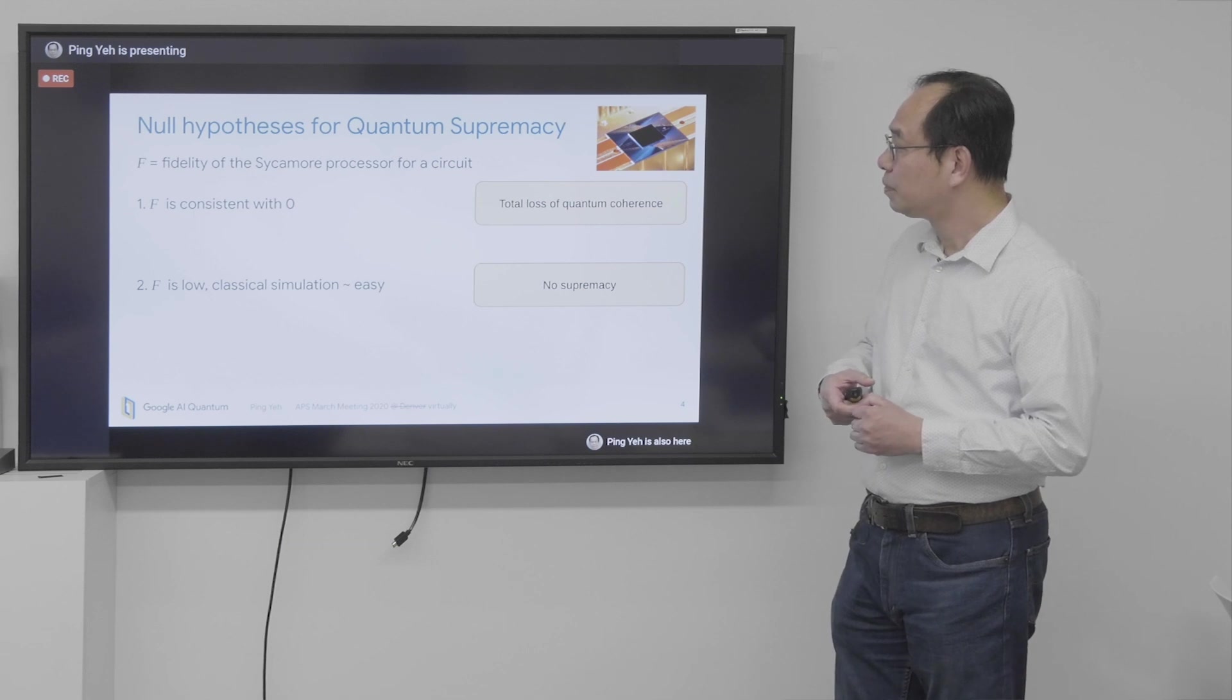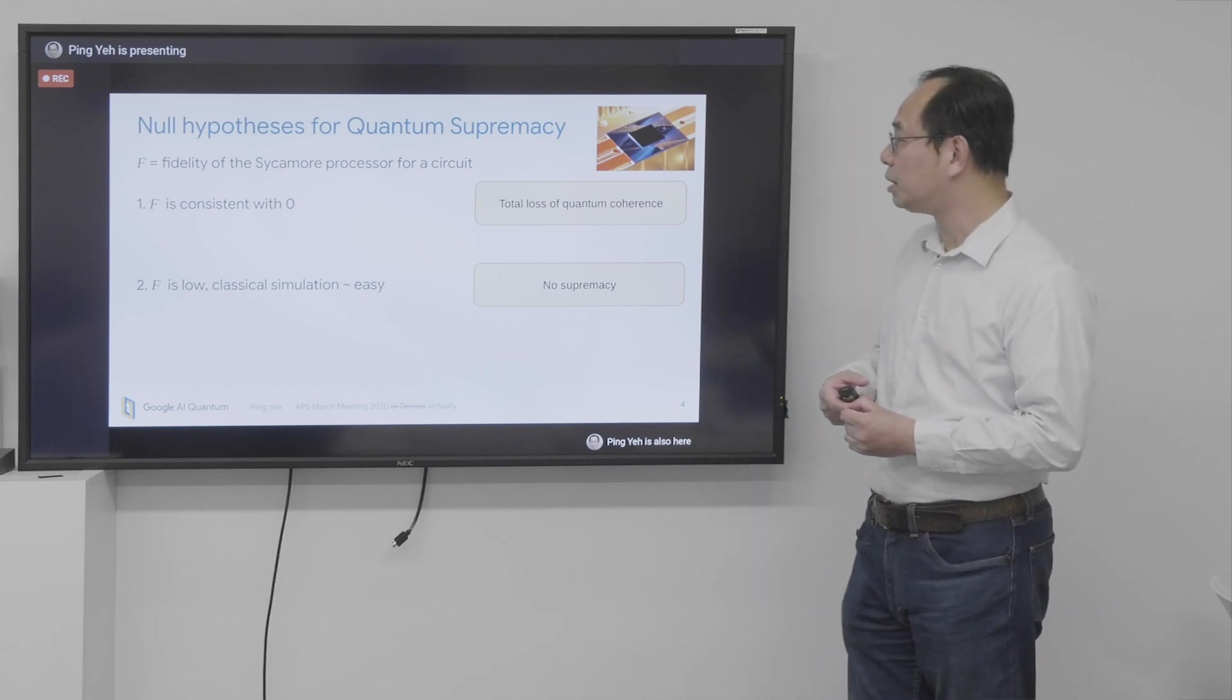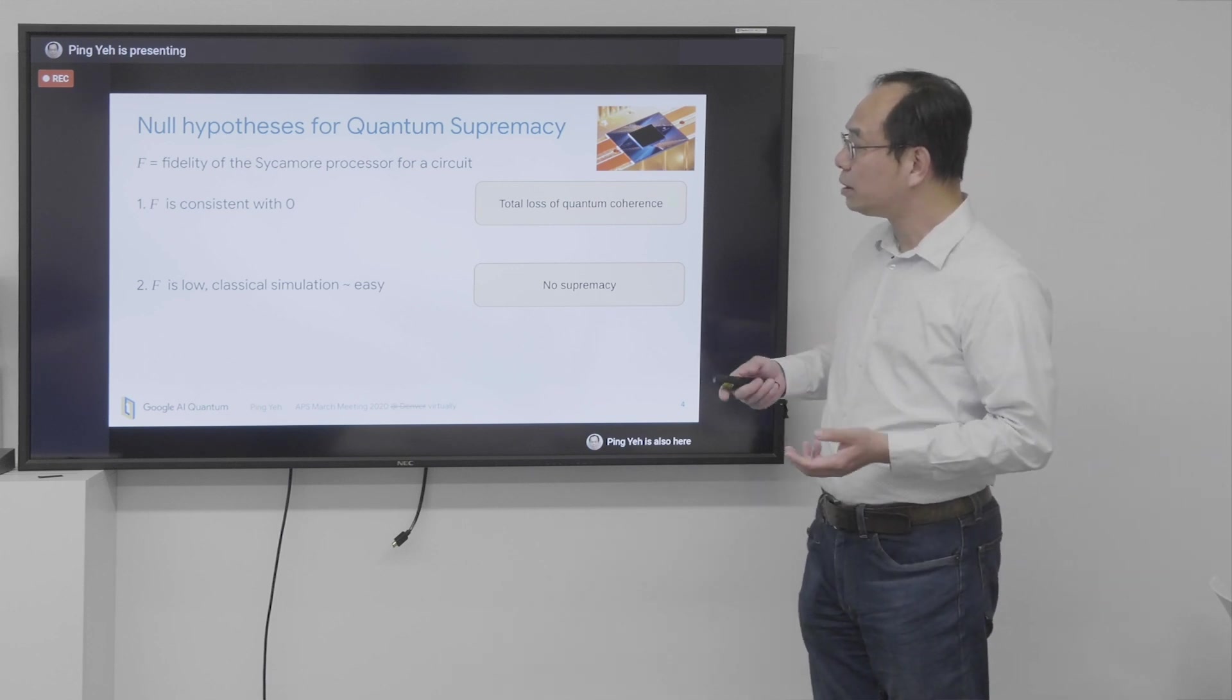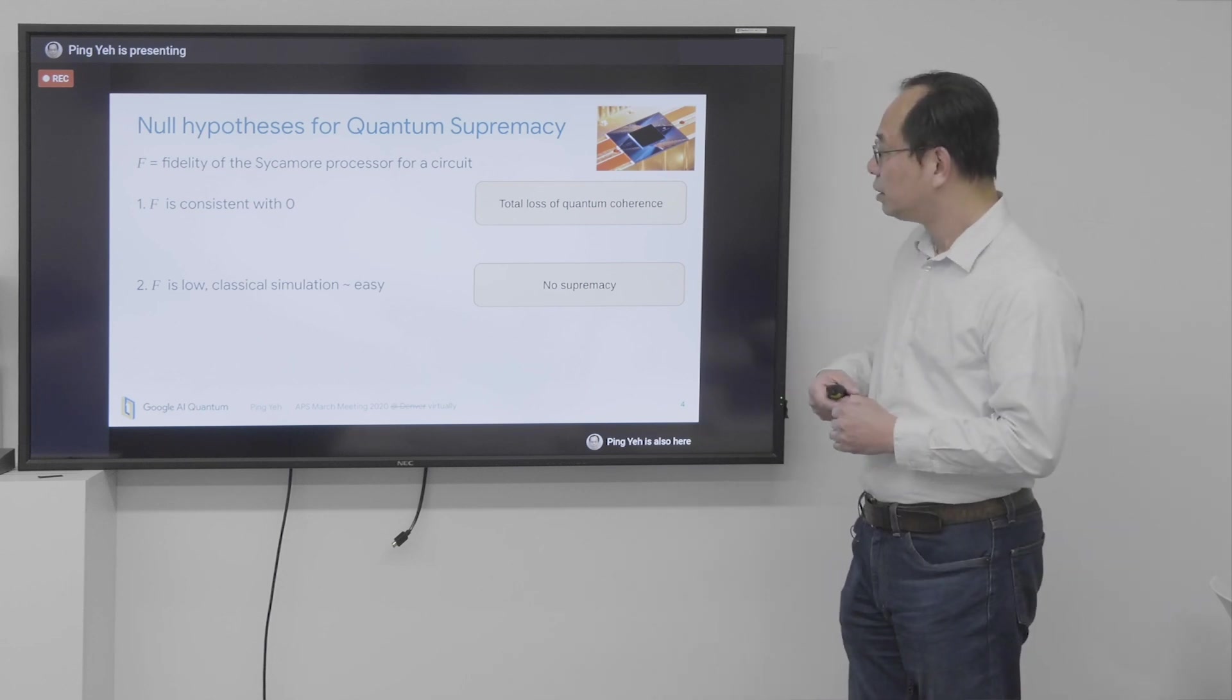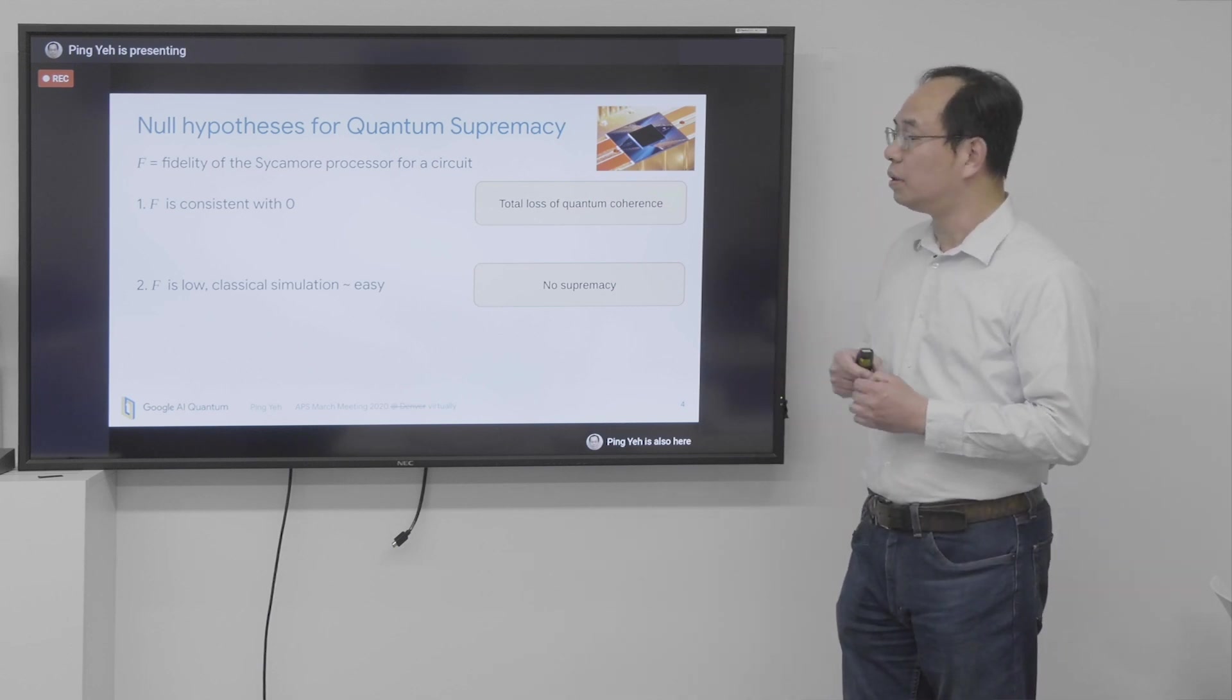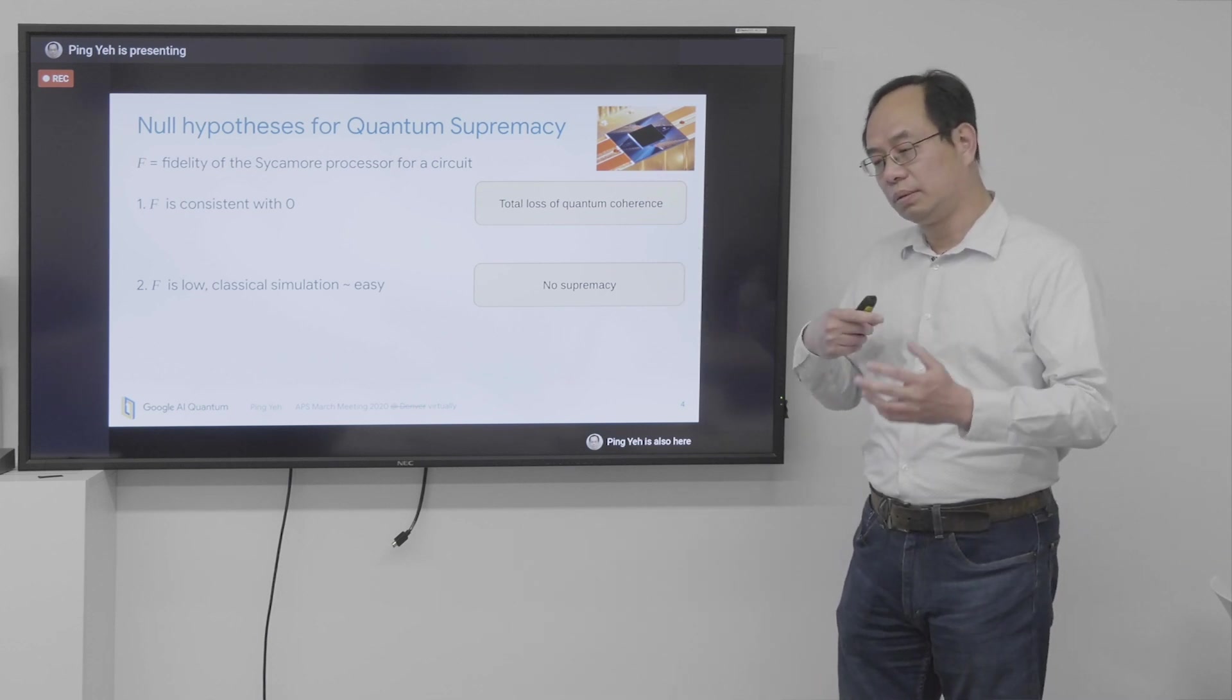So the first one is that F is consistent with 0. So that means the processor has lost quantum coherence. And the second one is that F is not 0, but it's low enough. So the classical simulation is easy. So that means no supremacy. So we want to reject both of this no quantum and no supremacy hypothesis.